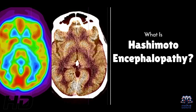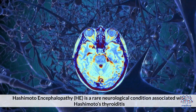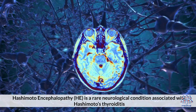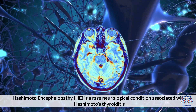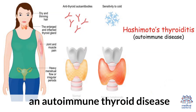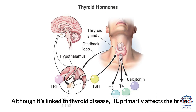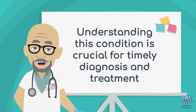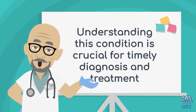Today's medical-centric topic is: what is Hashimoto encephalopathy? Hashimoto encephalopathy, or HE, is a rare neurological condition associated with Hashimoto's thyroiditis, an autoimmune thyroid disease. Although it's linked to thyroid disease, HE primarily affects the brain, causing various cognitive and neurological symptoms. Understanding this condition is crucial for timely diagnosis and treatment.